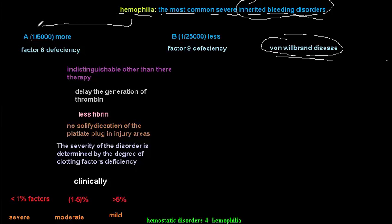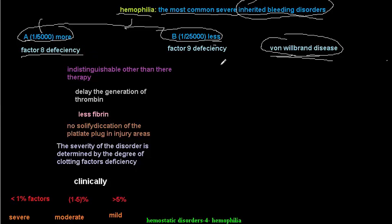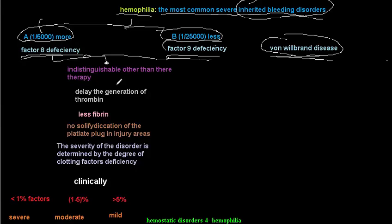There are two types of hemophilia: hemophilia A and hemophilia B. Hemophilia A is much more common — approximately 1 case per 5,000 persons — while hemophilia B occurs in about 1 per 25,000. Hemophilia A involves factor 8 deficiency and hemophilia B involves factor 9 deficiency; both factors are part of the intrinsic pathway. The two types are clinically indistinguishable, except when it comes to replacement therapy.